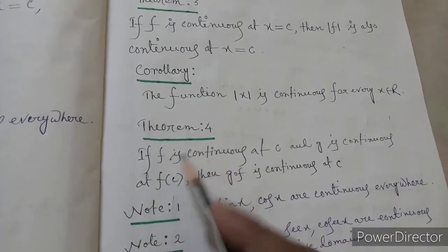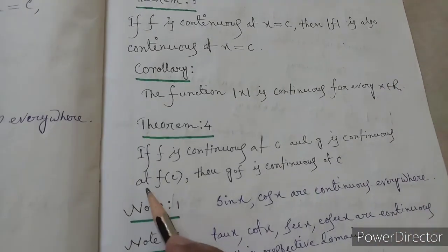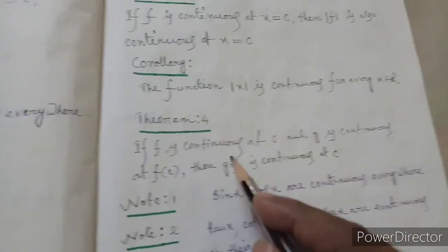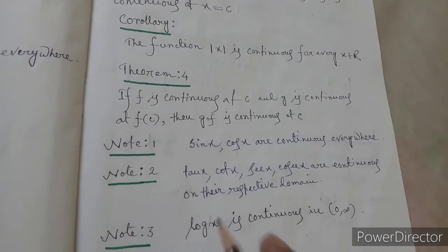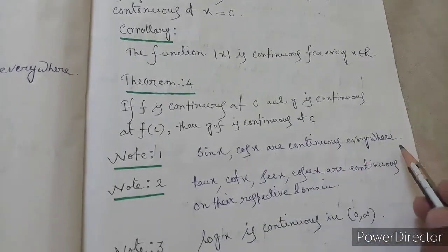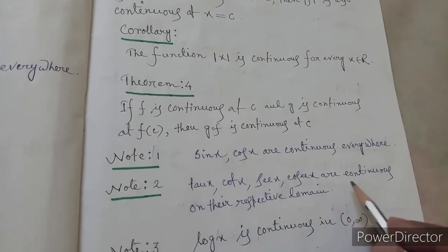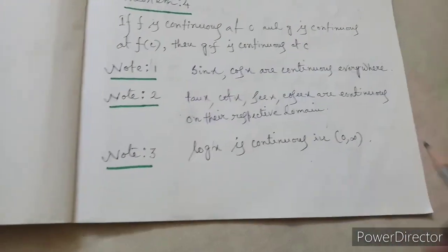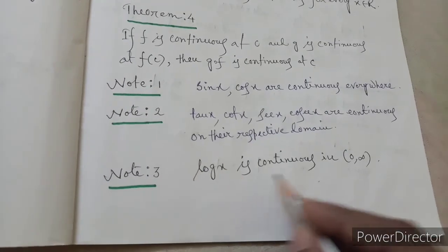Theorem four: if f is continuous at x equal to c and g is continuous at f(c), then g∘f is continuous — that is, the composition of g and f is continuous at x equal to c. Note one: sin x and cos x, the trigonometric functions, are continuous everywhere. Note two: tan x, cot x, sec x, and cosec x are all continuous functions on their respective domains.